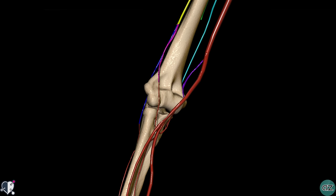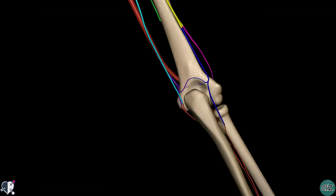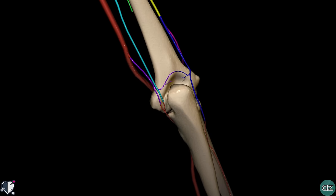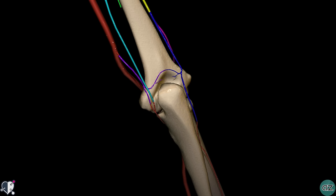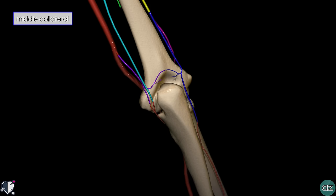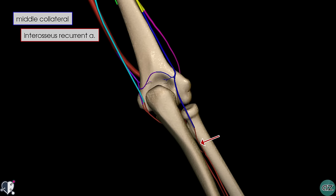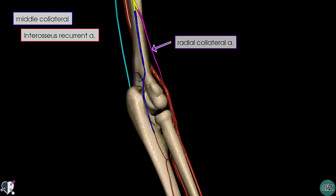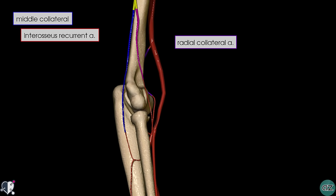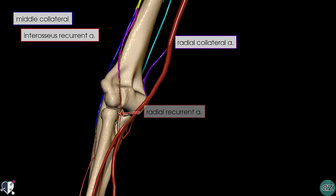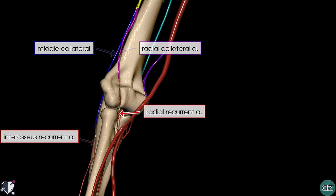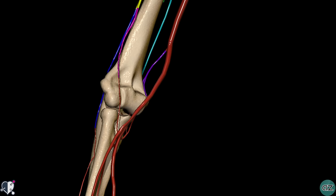Zooming in and rotating to a posterior view of the elbow, you can see how these collateral arteries anastomose around the elbow joint to form a rich anastomotic network. The middle collateral artery in blue descends to anastomose with the interosseous recurrent artery, which is a branch of the posterior interosseous artery. Rotating the model anteriorly, you can see how the radial collateral artery winds round to anastomose with the radial recurrent artery. A recurrent artery is simply an artery that reflects back in the opposite direction of its parent artery after its origin.